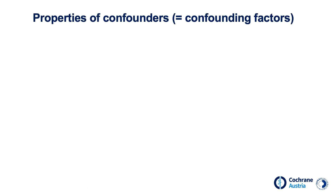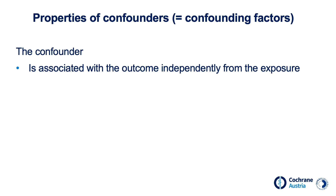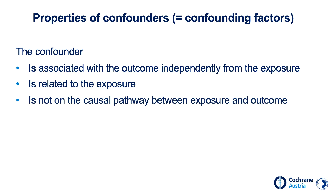We are dealing with a confounder if the following properties are present. The confounder must be related to the outcome regardless of the exposure — in our coffee example, smoking is an independent risk factor for coronary heart disease regardless of whether someone drinks coffee or not. The confounder must be related to the exposure — people who smoke often drink coffee. The confounder should not be on the causal pathway between the exposure and outcome, which is also fulfilled here, as drinking coffee does not automatically lead to smoking.